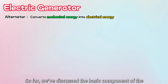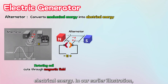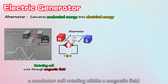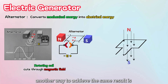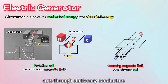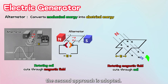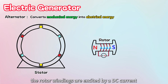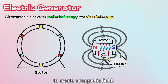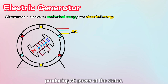So far, we've discussed the basic component of the generator, also called the alternator, which is the part that converts mechanical energy into electrical energy. A conductor coil rotating within a magnetic field can generate EMF. But instead of rotating the coil, another way to achieve the same result is by creating a rotating magnetic field that cuts through stationary conductors to generate electricity. In real-world generators, this second approach is adopted. The stator, or stationary part, holds the stator windings. The rotor windings are excited by a DC current to create a magnetic field. When the rotor spins, the magnetic field rotates and cuts through the stator windings, producing AC power at the stator.